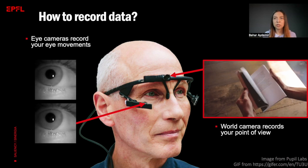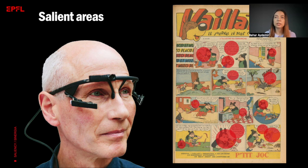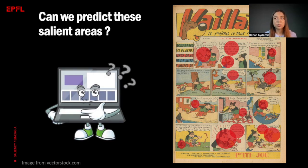Then we can detect the regions that stand out compared to their surroundings, which are known as salient areas. In this image, the red circles highlight the areas which gathered more attention. However, the eye tracking experiments are costly and they take too much time if we repeat them for every new page of comics. Therefore, we use algorithms to predict the salient regions automatically. That is, we give the comic page to the computer and it will tell us the most important parts in this page.